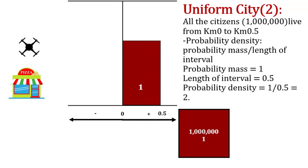In this next example, the graph looks the same but the values change. Here the whole population is between kilometer zero and kilometer 0.5 — so it's much more concentrated. Graphically we don't see it differently, but because the value is 0.5 instead of 20, that means there are many more people relative to the interval than in the previous case.